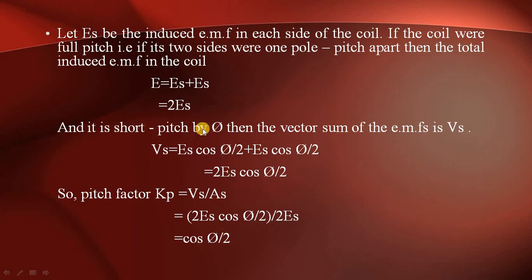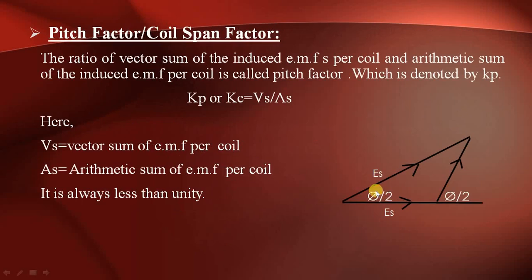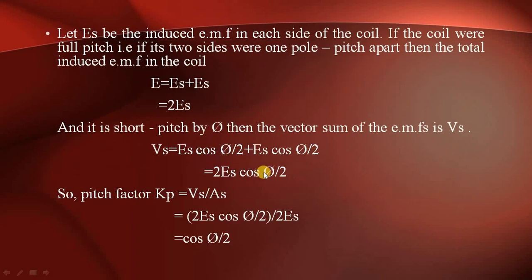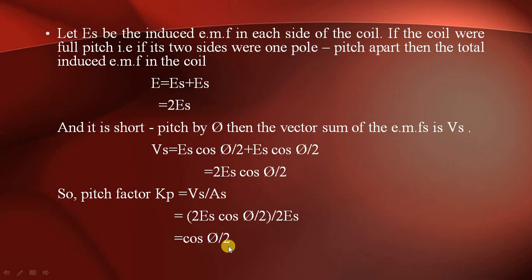Now for a short pitch coil, suppose the short pitch angle is π. Then the vector sum of induced EMF is Vs equals ES·cos(π/2) plus ES·cos(π/2), which equals 2ES·cos(π/2). So the pitch factor Kp equals the vector sum of induced EMFs per coil divided by the arithmetic sum of induced EMFs per coil, which gives 2ES·cos(π/2) divided by 2ES. The 2 and ES cancel, giving Kp equals cos(π/2). This is the derivation of the pitch factor.